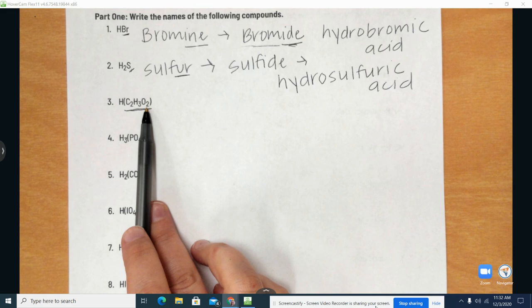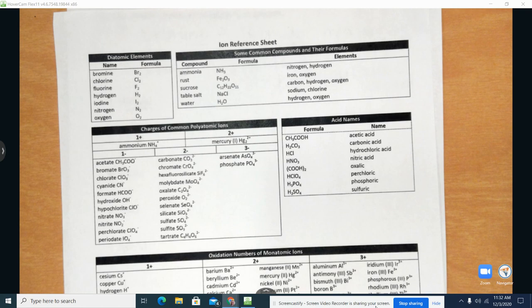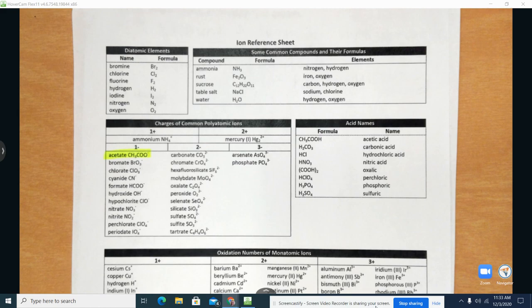So this is a polyatomic ion. That means we need to refer to our polyatomic cheat sheet to find it. So then we actually have it right here. So it's acetate.